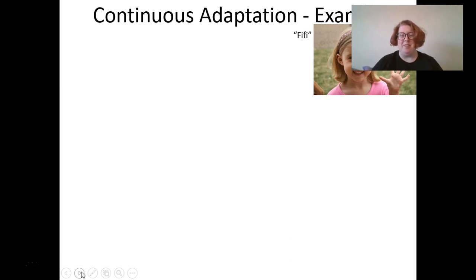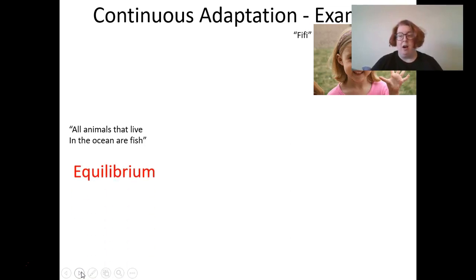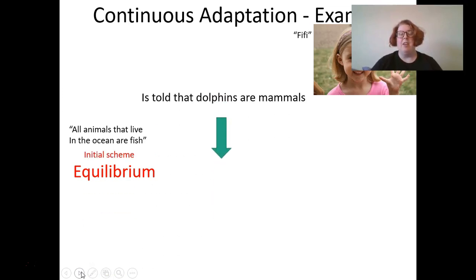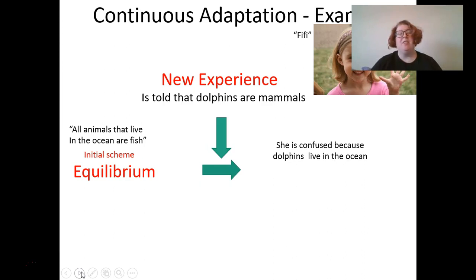So this is Fifi. Fifi says all animals that live in the ocean are fish — that's a pretty common understanding, and she's at a state of equilibrium with her initial scheme. Then she's told that dolphins are mammals — her teacher says it, or a friend on the playground says it. That's her new experience, and now she's confused. She's at a state of disequilibrium because dolphins live in the ocean, but if dolphins are mammals, hmm.